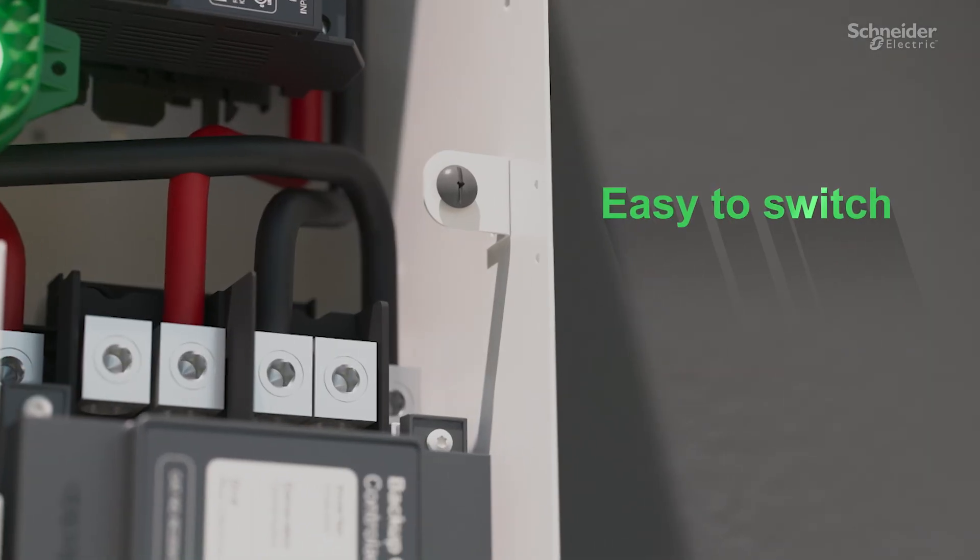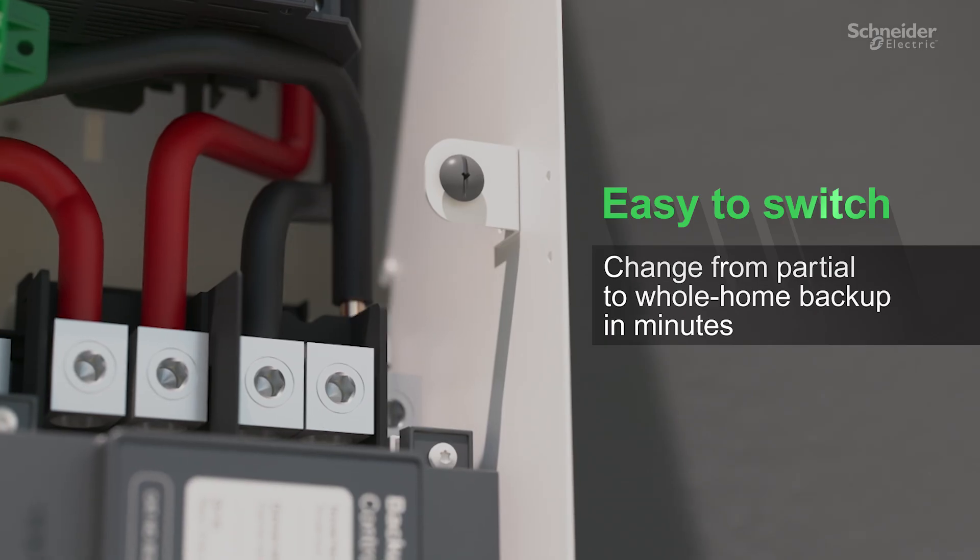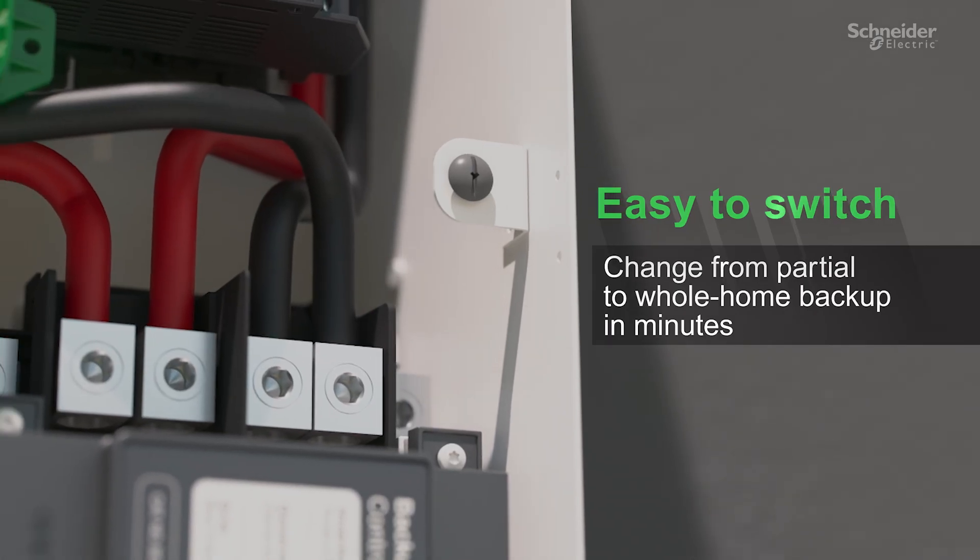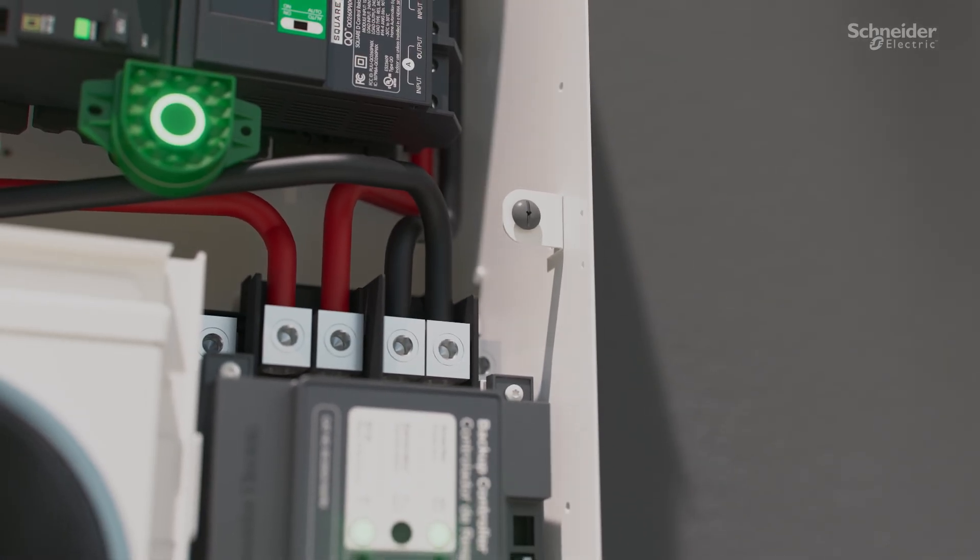Switching between partial and whole home backup is a breeze. Simply loosen the outer lugs on the power distribution block and move those wires to the center lugs. You're done in minutes.